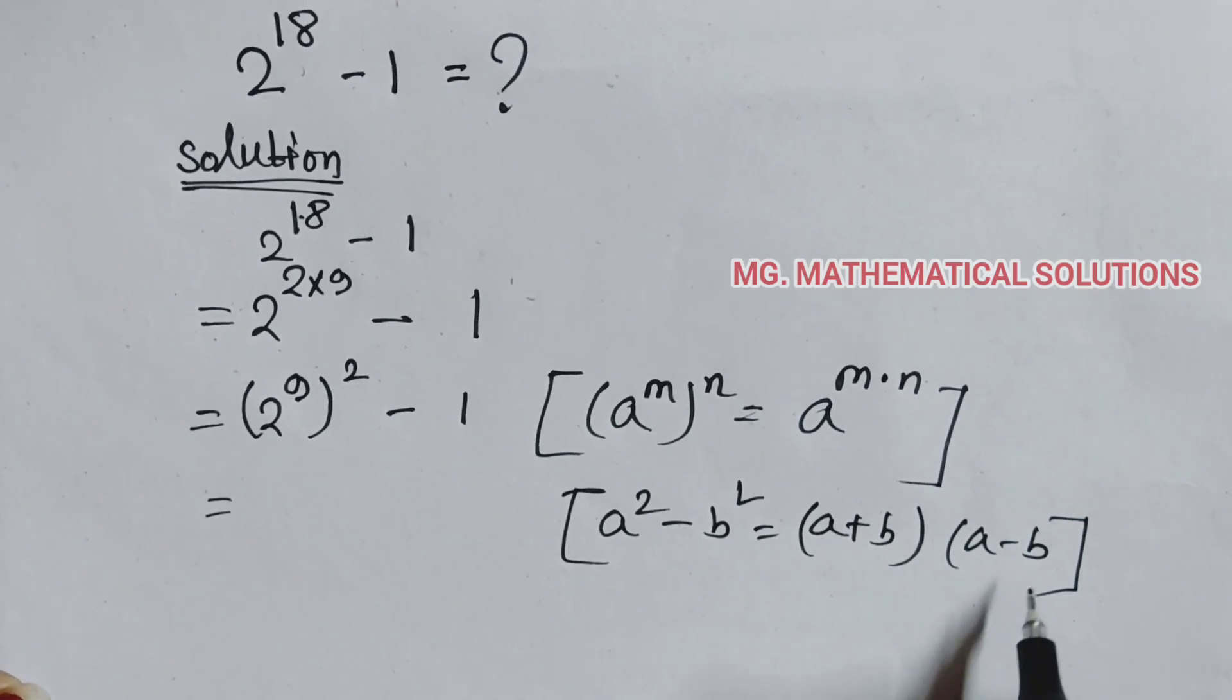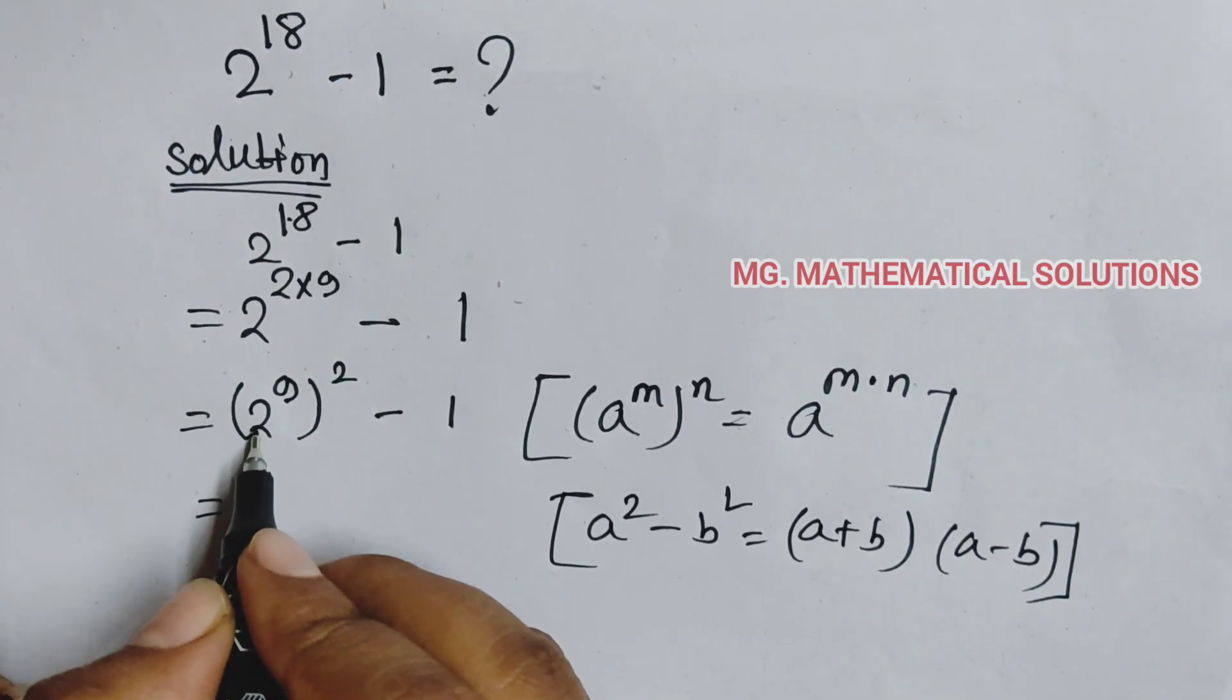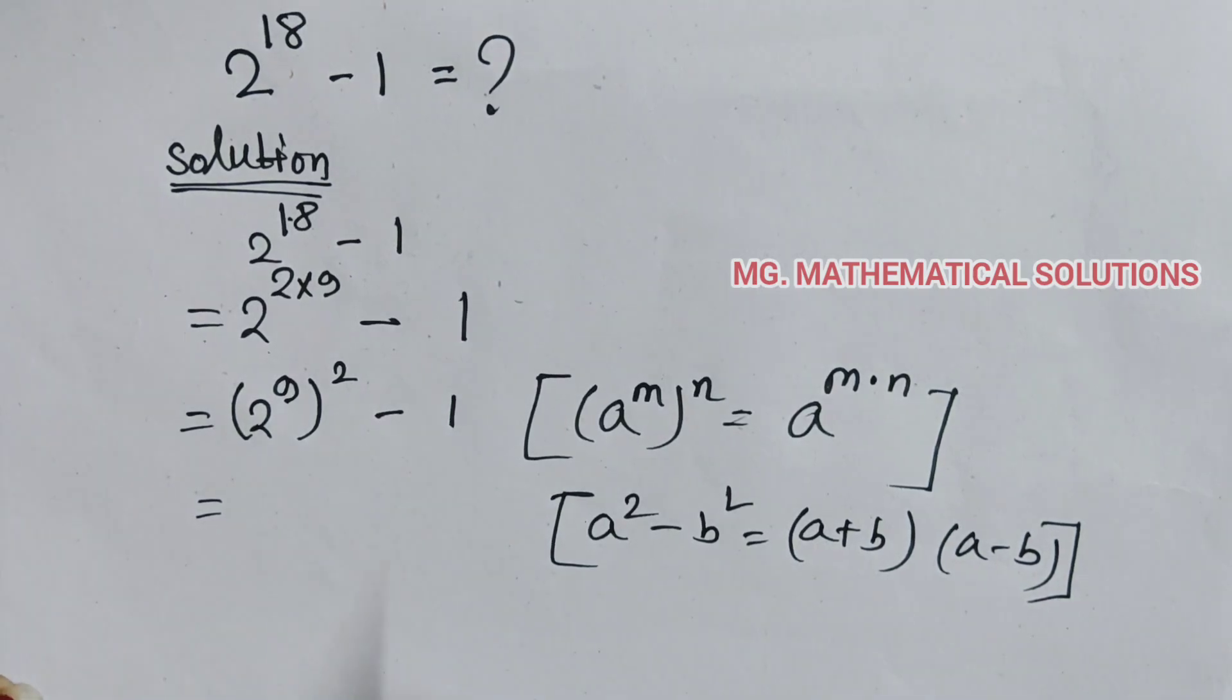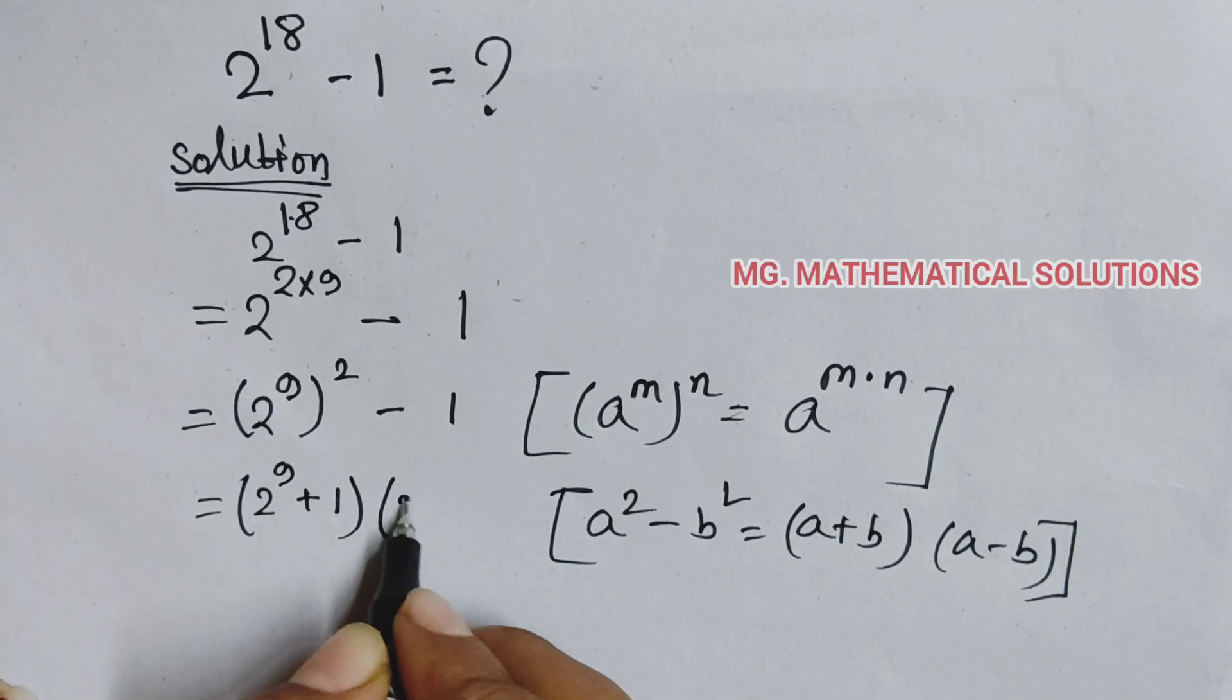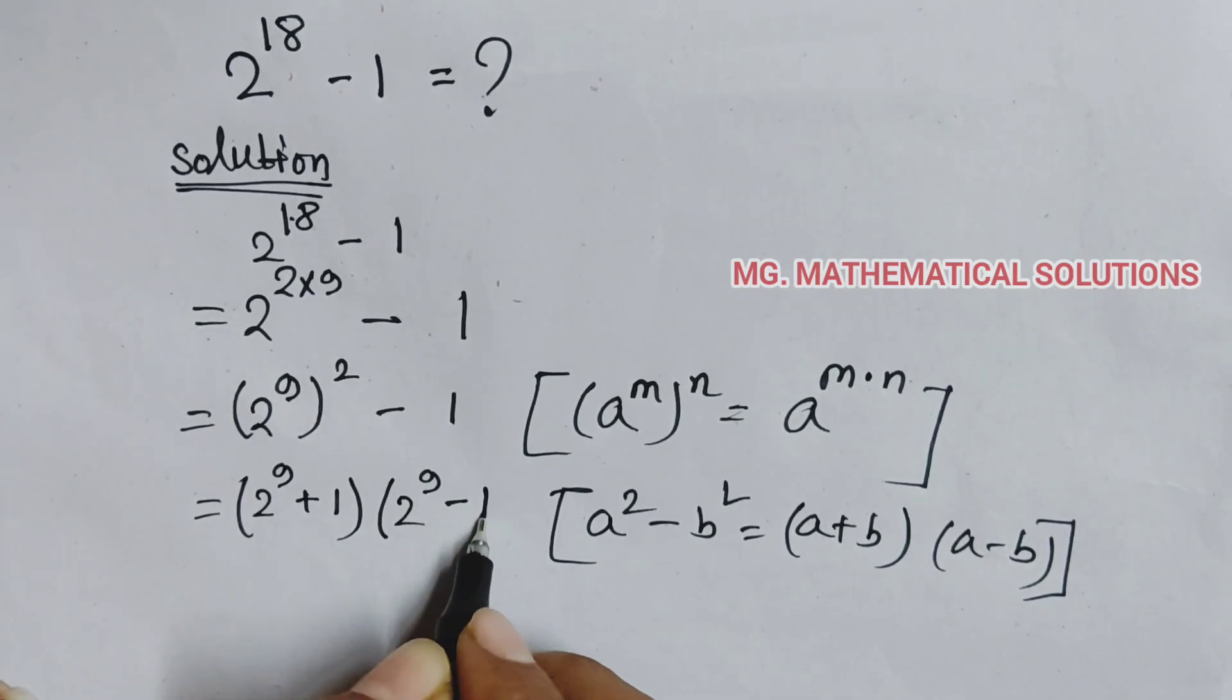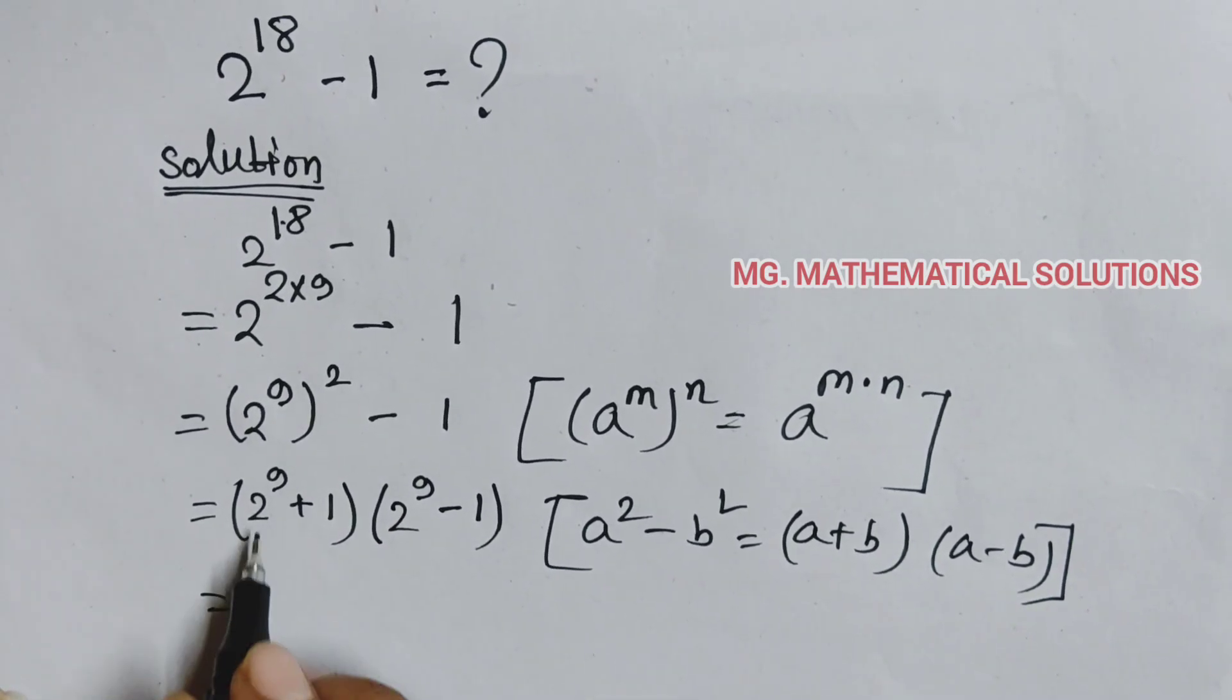Now here a equal to 2 to the power 9 and b equal to 1. So 2 to the power 9 plus 1 into 2 to the power 9 minus 1. We know 2 to the power 9 equal to 512.